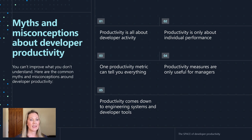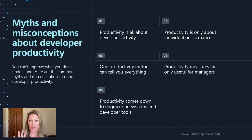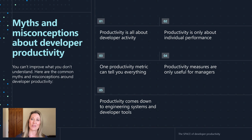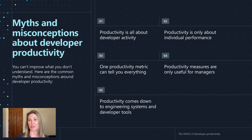Number three, one productivity metric can tell you everything. Everyone wants the one metric that matters. Also no. Number four, productivity measures are only useful for managers. That's also not true because it can really help individual developers. And then the last one: productivity comes down to just tooling and engineering systems. We'll debunk that one too.